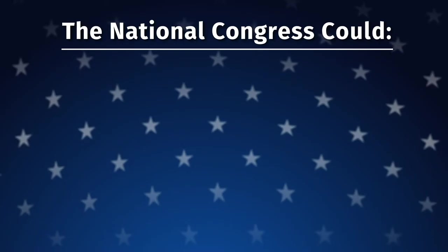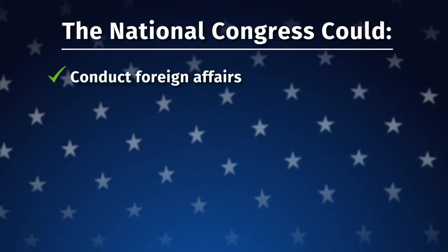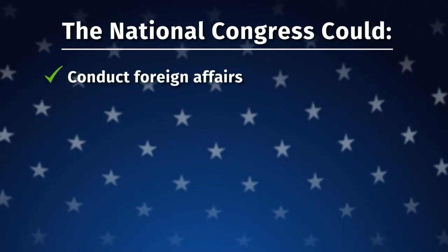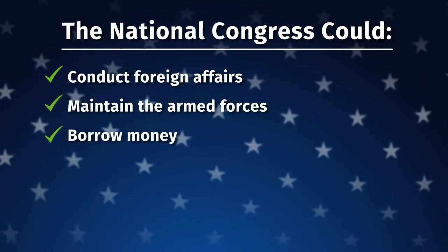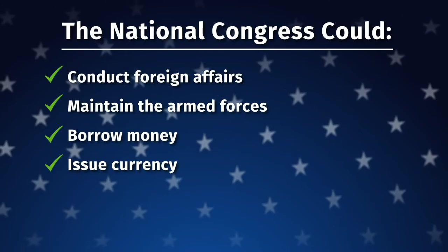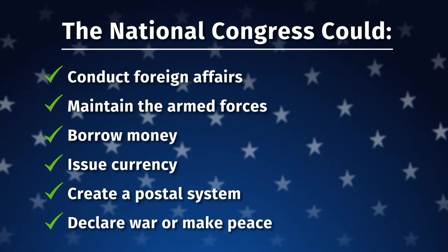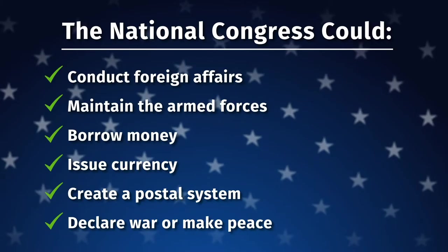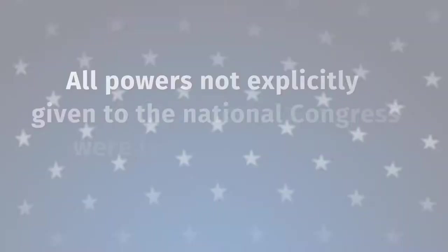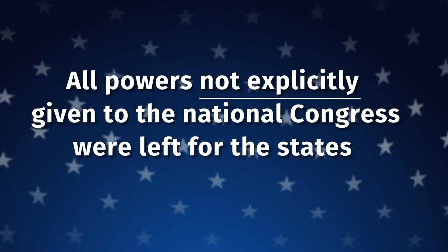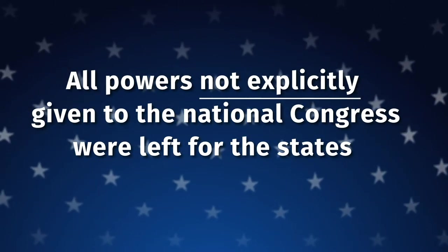The Articles of Confederation gave Congress limited powers, like they could conduct foreign affairs, maintain the armed forces, borrow money, issue currency, create a postal system, and declare war or make peace. According to the Articles, all powers not explicitly given to the National Congress were left for the states.